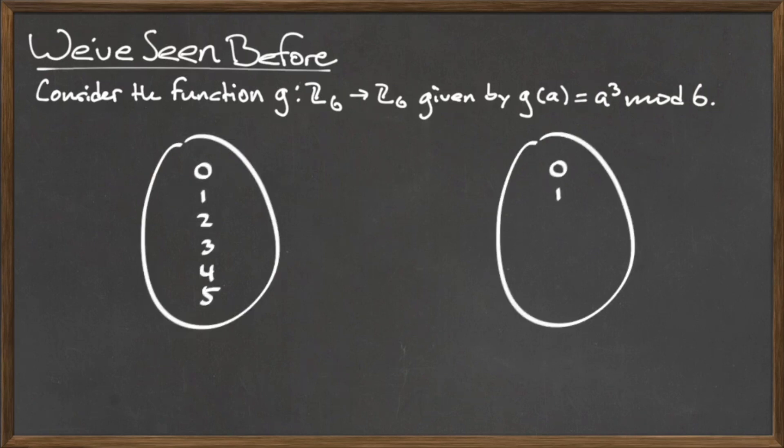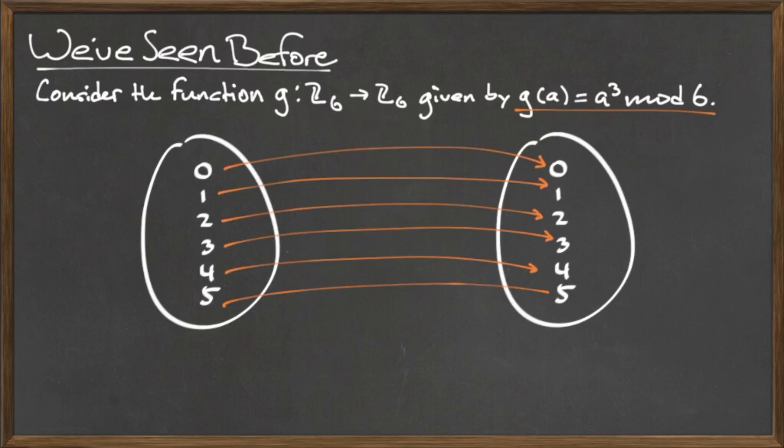On the left are the elements of the domain, and on the right are the elements of the codomain. Since the domain and codomain are both Z mod 6, the elements are the same. If we compute the image under g for each element in the domain, we see that it actually gets sent to itself in the codomain.